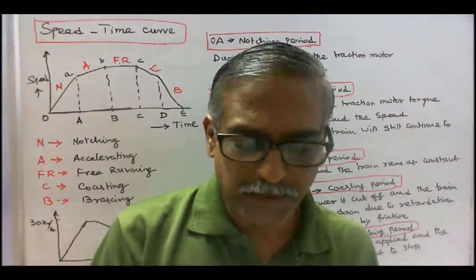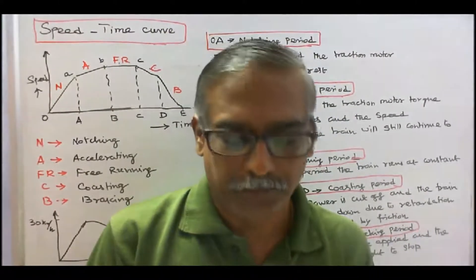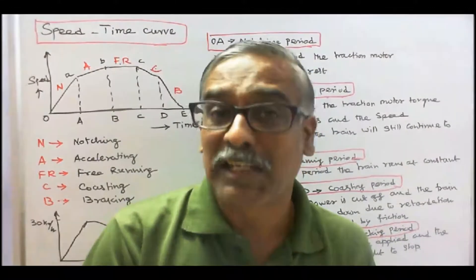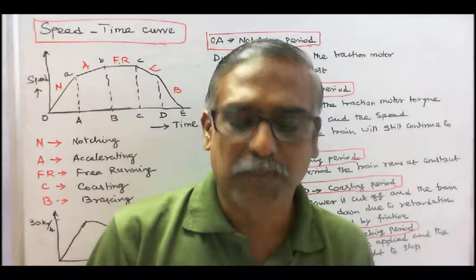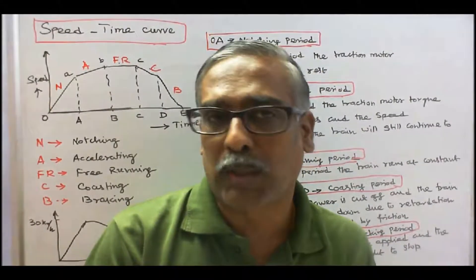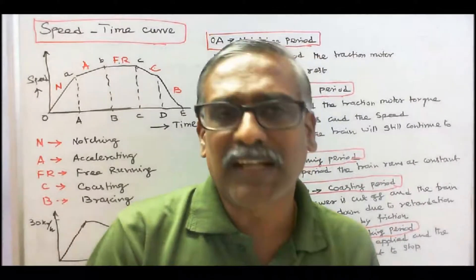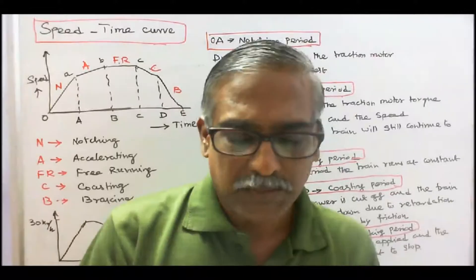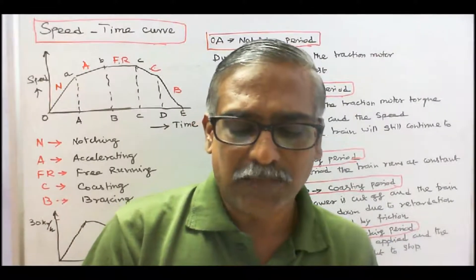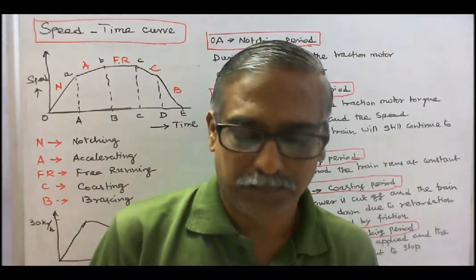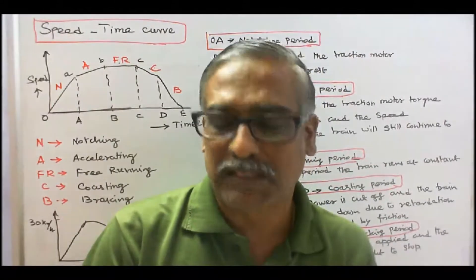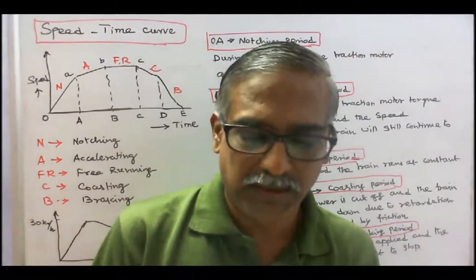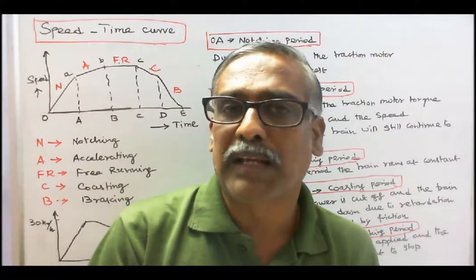What is the difference between speed and velocity? Speed is the rate of change in distance with respect to time. Since distance is a scalar quantity, speed is also a scalar quantity with no direction. Velocity is the rate of change in displacement with respect to time, and since displacement is a vector quantity, velocity is also a vector quantity with both magnitude and direction.